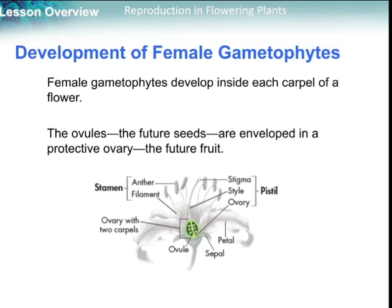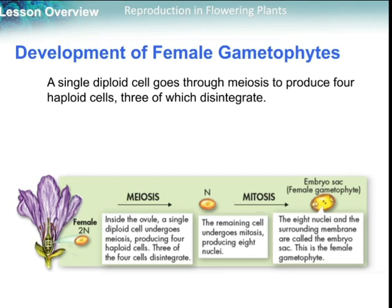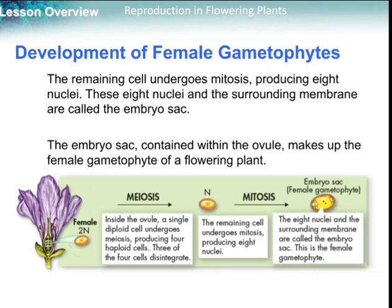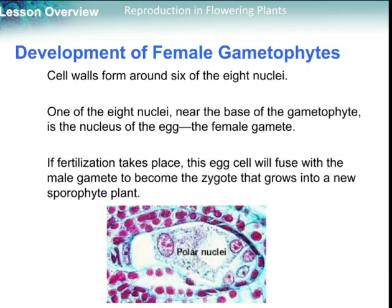Now let's check female gametophyte development. The female gametophyte develops inside each carpel of a flower. The ovules, which will become the future seed, are enveloped in a protective ovary — the future fruit. A single diploid cell goes through meiosis to produce four haploid cells; three of them disintegrate, leaving one haploid cell. This haploid cell undergoes mitosis, producing eight nuclei — this is the embryo sac. The embryo sac, contained within the ovule, makes up the female gametophyte. One of the eight nuclei near the base of the gametophyte is the nucleus of the egg, the female gamete.